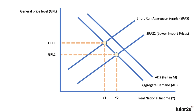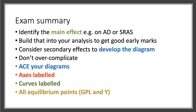There's also potentially a rise in aggregate demand if we're spending less on oil imports, so AD may shift out. Taking the latest equilibrium points, national income could move to Y3 and the price level to GPL3. What we're doing here is using aggregate supply and demand analysis to explain some possibilities. The evaluation — the discussion challenging and questioning about the extent — comes with the higher mark questions. When building ADAS diagrams, keep them simple: identify the main effect first, focus on that, then build into your analysis to get those good early marks.